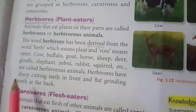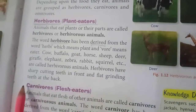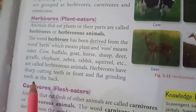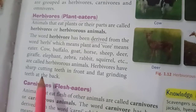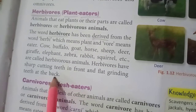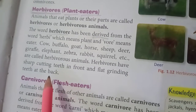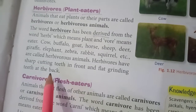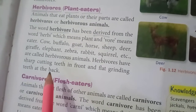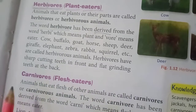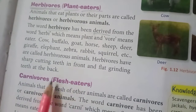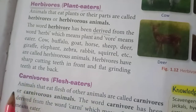Herbivores have sharp cutting teeth in the front and flat grinding teeth in the back. The flat teeth help them grind their food — for example, when you eat roti, you chew it with the back teeth, which are flat.